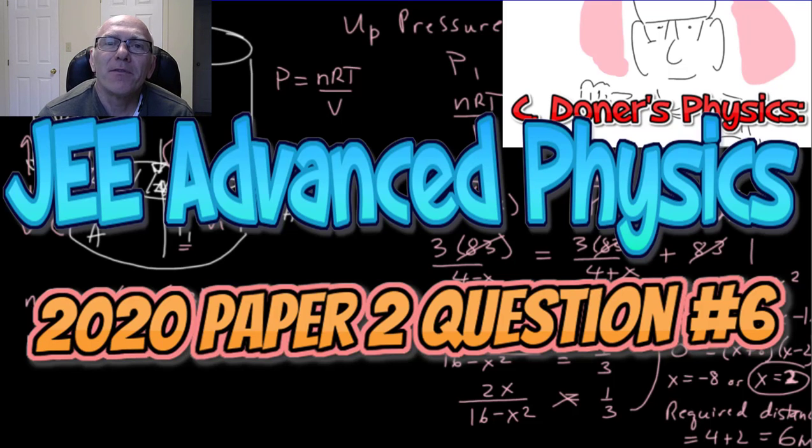We've got a JEE Advanced physics question. This one's on ideal gases and it's taken from the 2020 paper 2, question number 6.